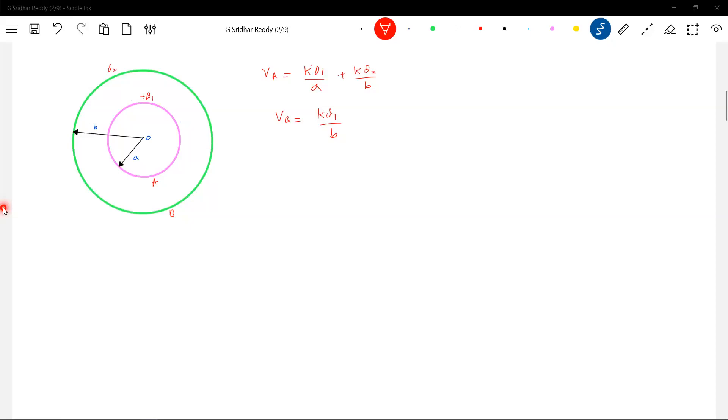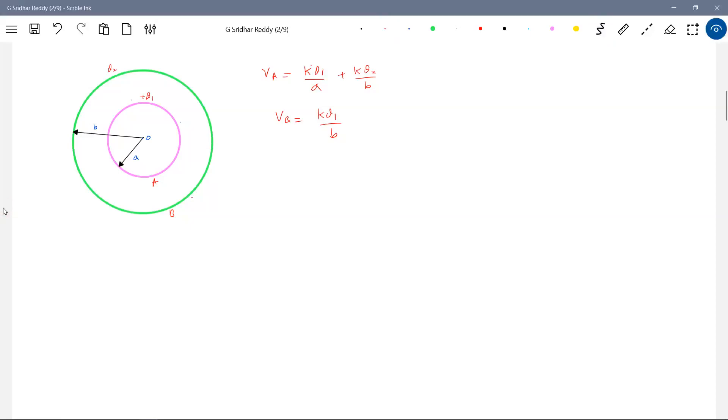Look at this one. Potential at B only due to shell A. So where the point? Point lies outside. And at what distance from the center? B. Where is the point? I'm finding out potential here. So assume that shell B is not there. Only shell A. Where the point? Point lies on the surface of shell B. So what is the potential surface of shell B? KQ1 by A, KQ2 by B.